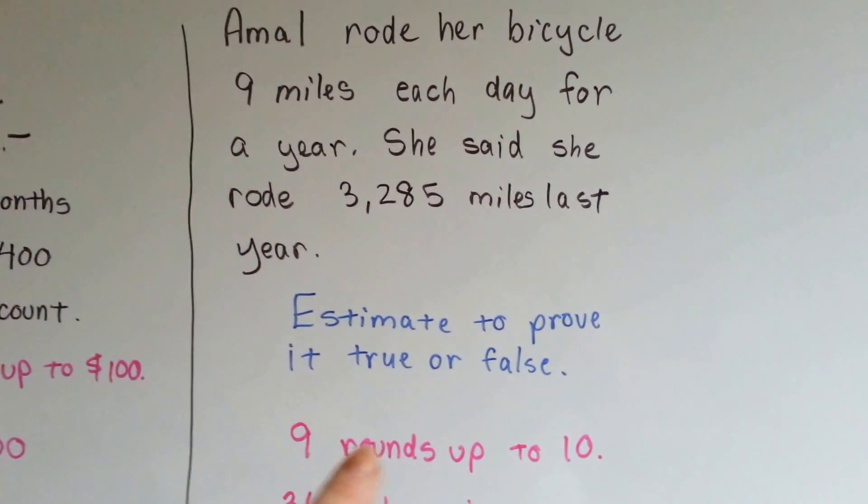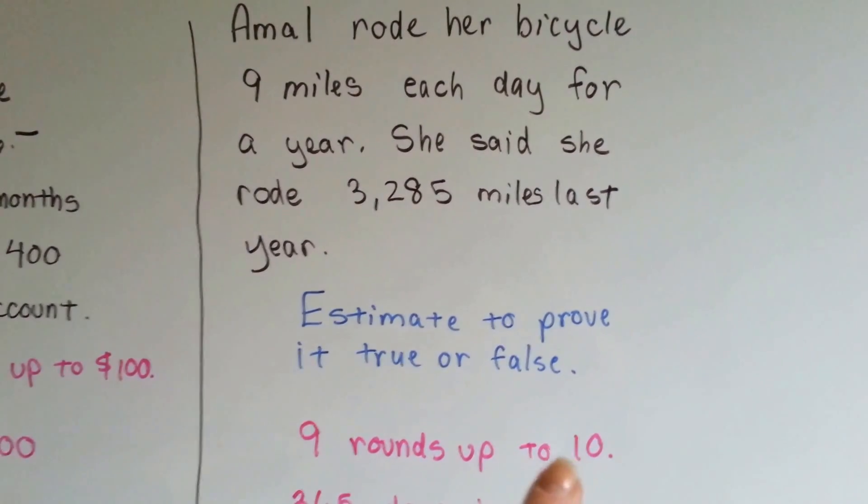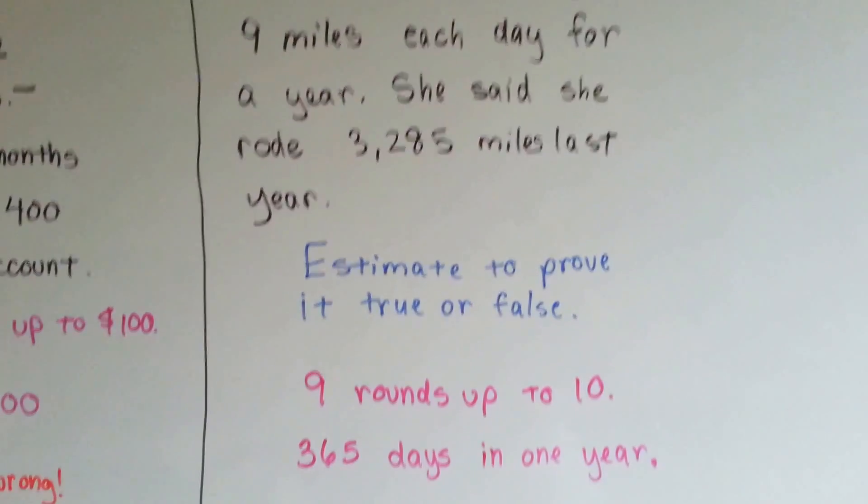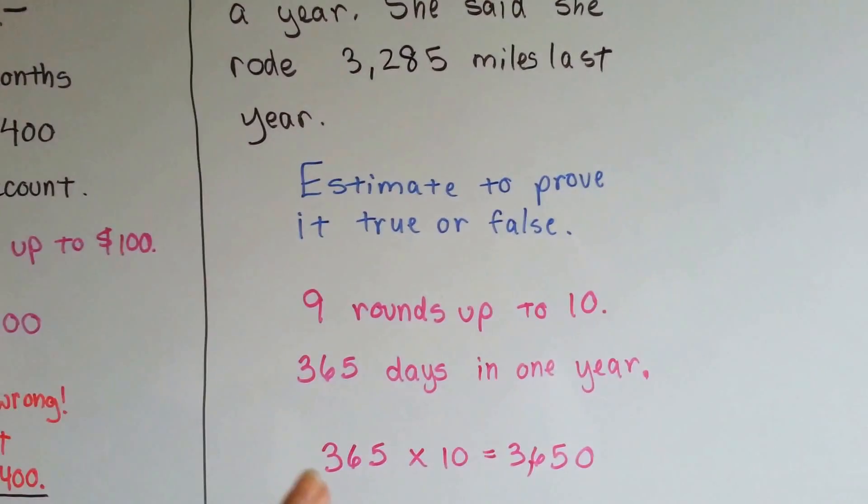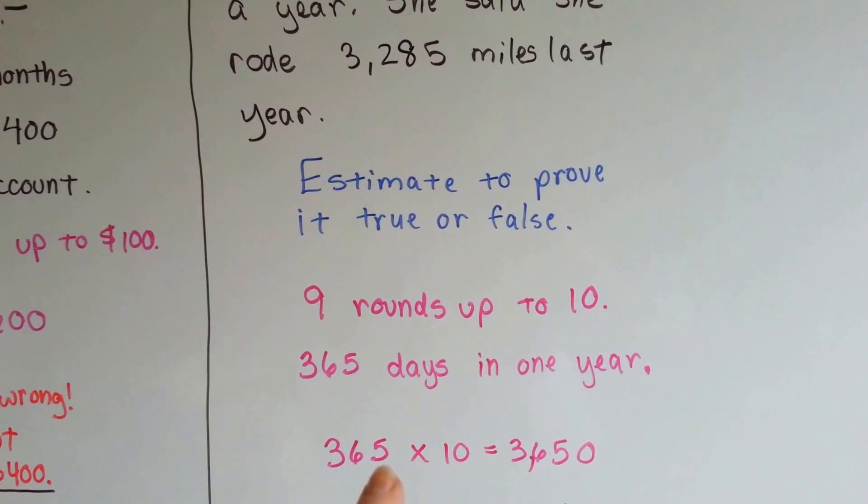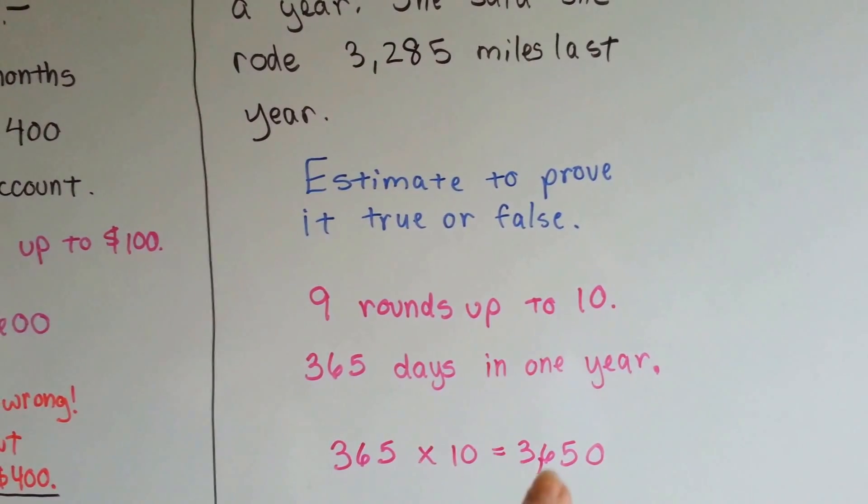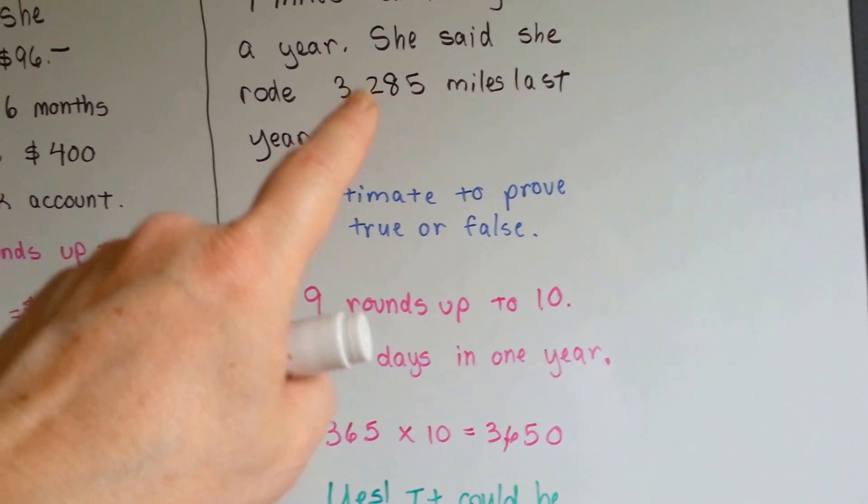9 miles rounds up to 10. That's a lot easier to work with. So let's say she rode 10 miles a day. There's 365 days in a year. 365 times 10. You just add a zero to the 365 and we get 3,650. She said she rode 3,285.